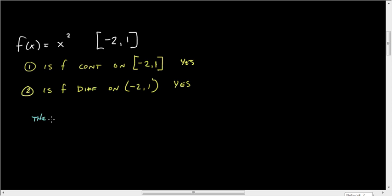Then there's some C value, which is in (-2, 1), the open interval, such that the derivative at C, now at least one, it doesn't say that it's limited to one, but there's at least one,